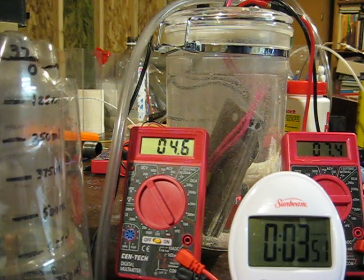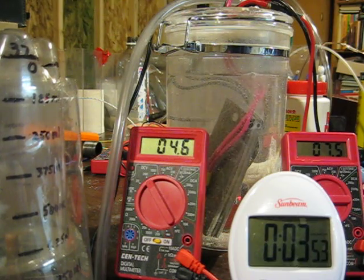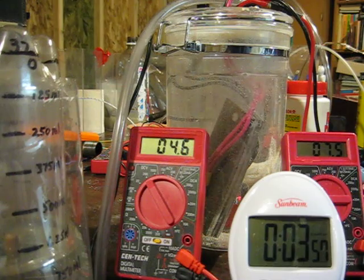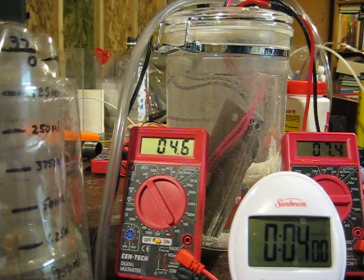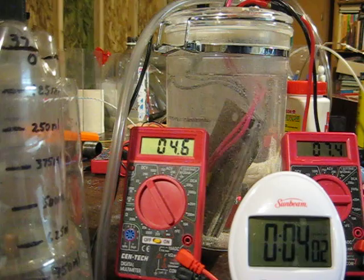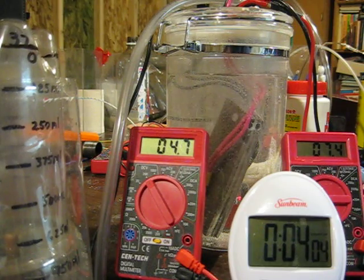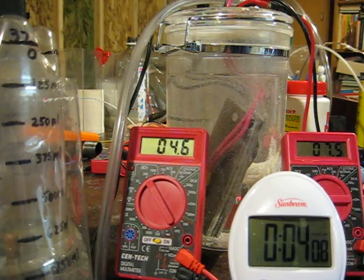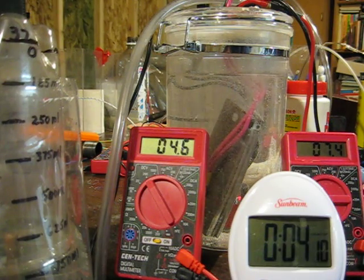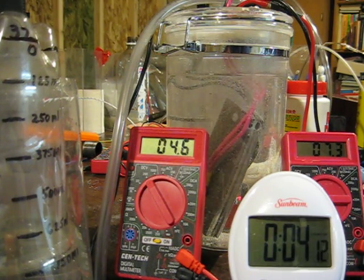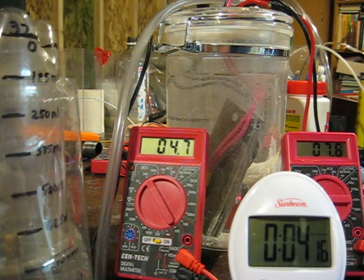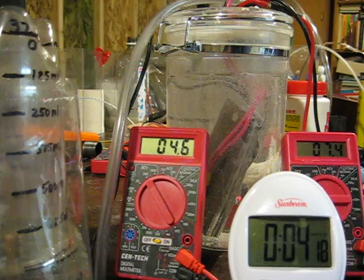If you want to figure out the efficiency, you want to know what the milliliters per watt is. And if you want to know how fast you're producing it, you want to know how many milliliters per minute you're producing. But because other people in the forum use this method, that's what I do.